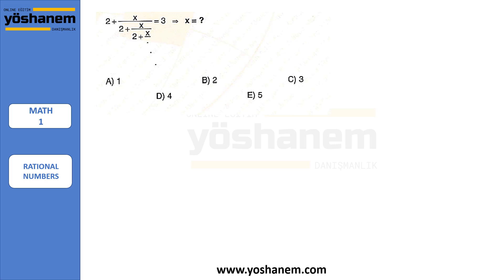Now let's look at an example of an infinite continued fraction question. It says 2 plus x divided by 2 plus x divided by 2 plus x, and it continues like that, and the whole expression equals 3. When solving a question like that, you simply replace the repeating part — this part here — with whatever the question equals to, and in this question it's 3.